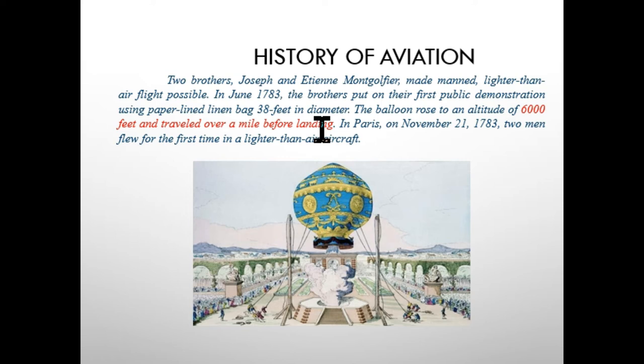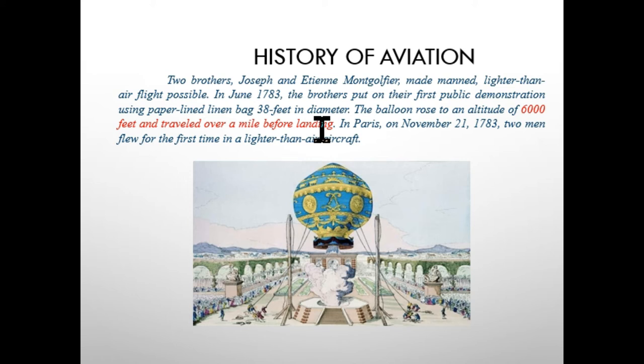A public demonstration was done by two brothers, Joseph and Étienne Montgolfier. They made a public presentation stating they could lift an object to an altitude of 6,000 feet and move it for a distance of one mile. This was achieved using a balloon-shaped object made of linen cloth.